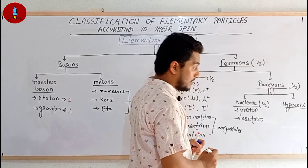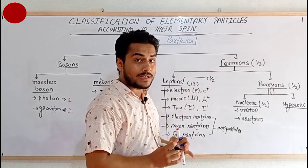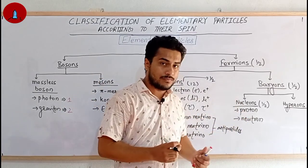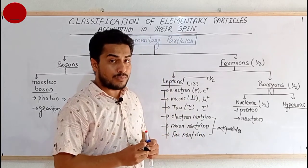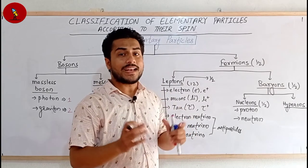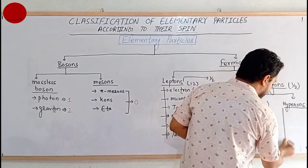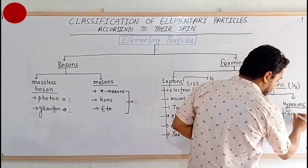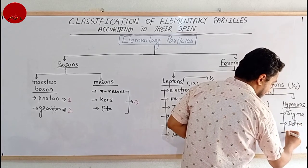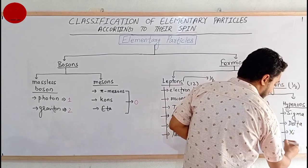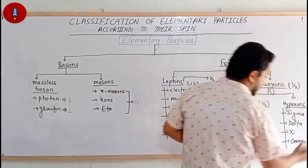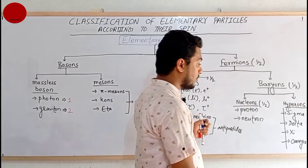Now let us talk about hyperons. Hyperons are such subatomic particles which have mass heavier than the proton and neutron, and they exist in neutron stars and supernovae. The hyperons include sigma, delta, xi, and omega.